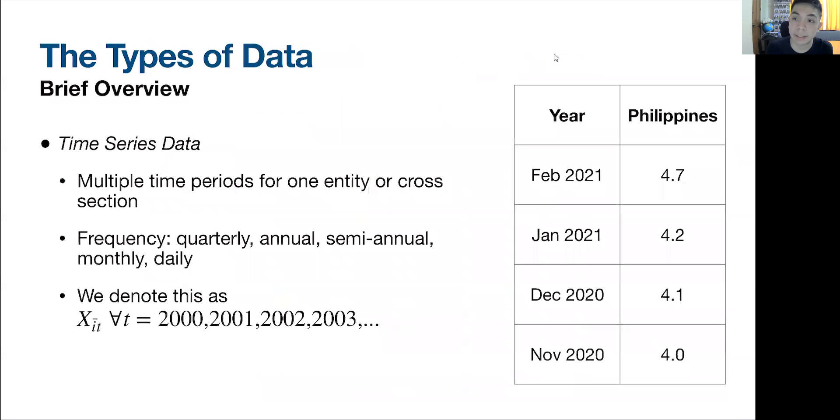The second type of data is a time series data set. It's essentially the most common if you try and ask a person how do you think data looks like. Generally, a lot of them would think of time series data. It's basically multiple time periods for one entity or cross-section. In here, for example, you have the Philippines, which is one entry or cross-section. Then, this is actually month, not year. We have here multiple time periods. You have here for February, for January, for December, for November. And the Philippines has a data point for each of those. It doesn't vary through cross-sections because we just have the Philippines here. It just varies through time.